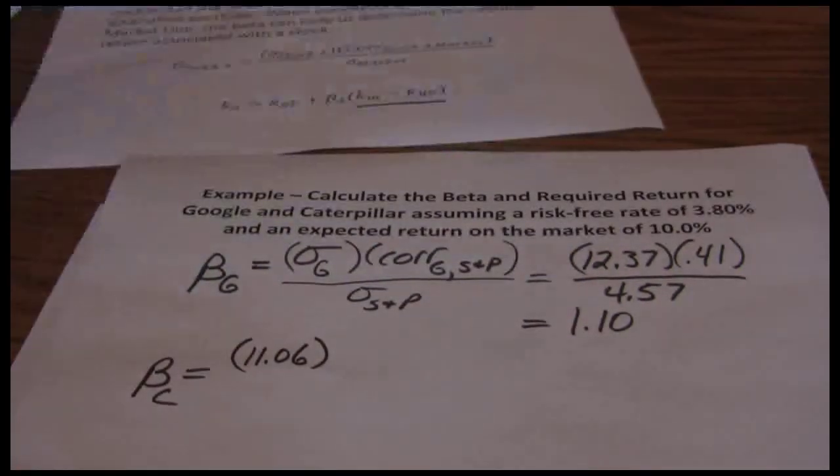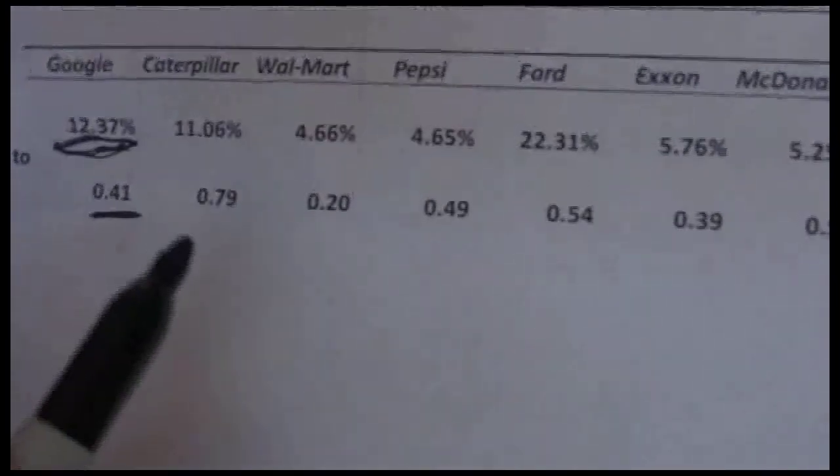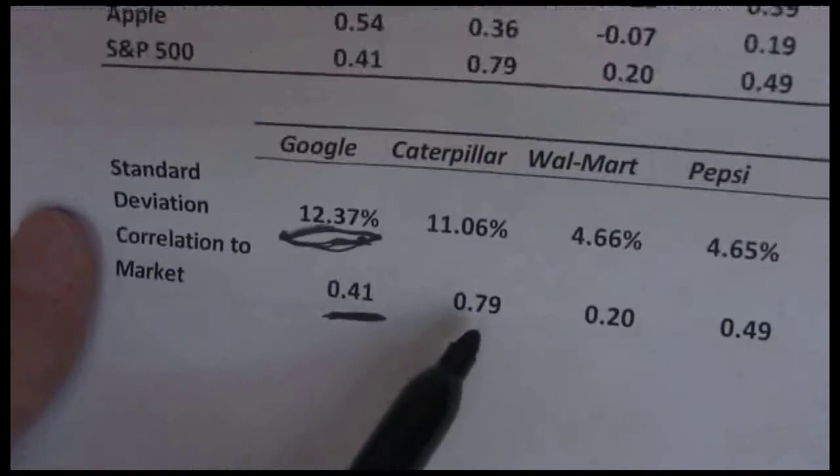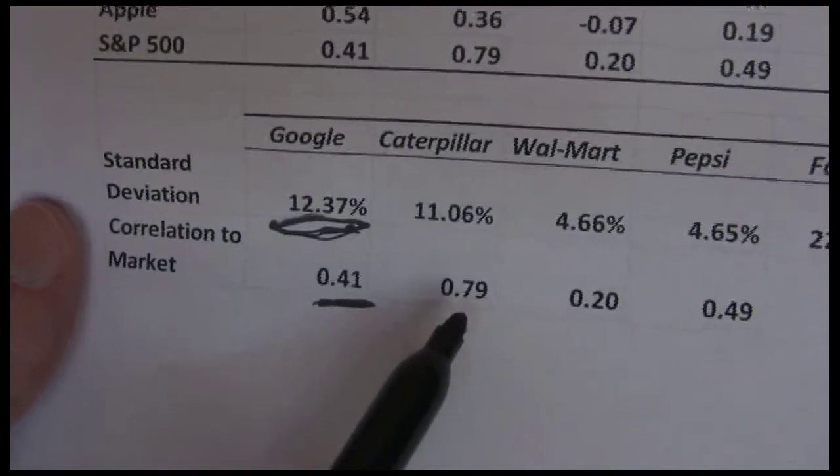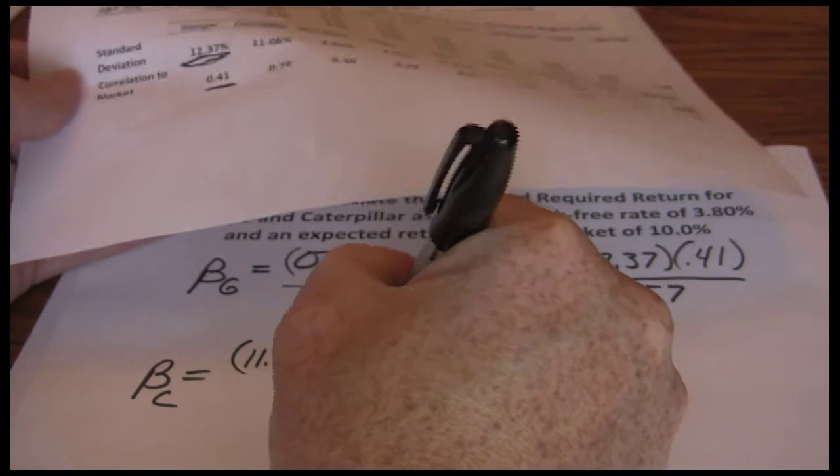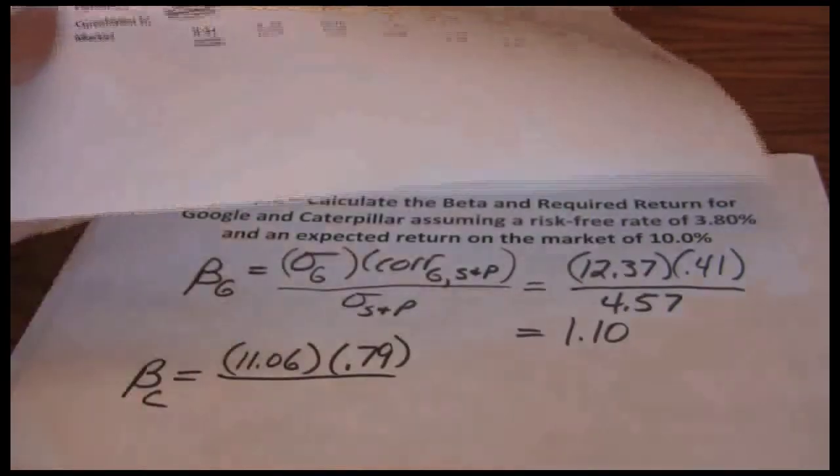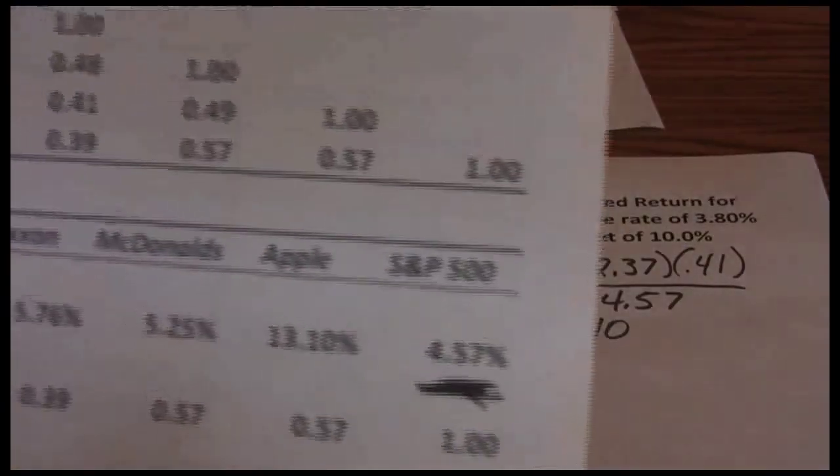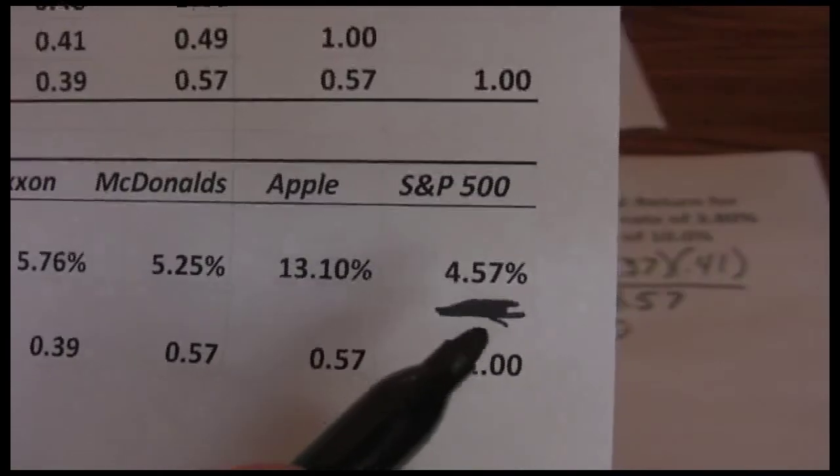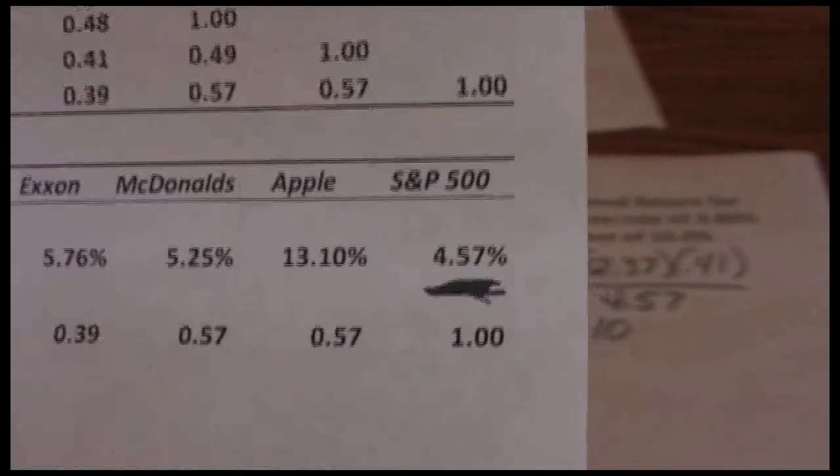Times the correlation between Caterpillar and the market. Correlation to the overall market of Caterpillar, 0.79. And divide by the standard deviation of the market. It's that 4.57% standard deviation for the S&P.